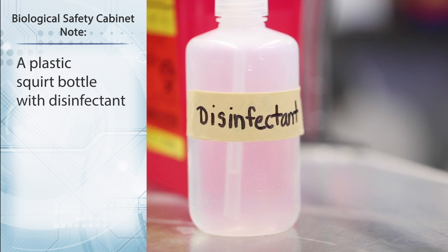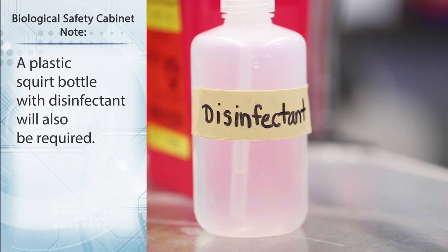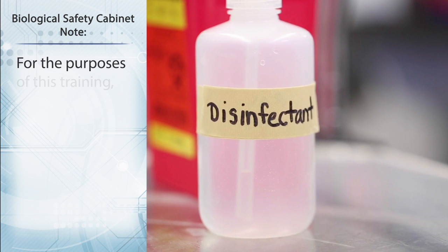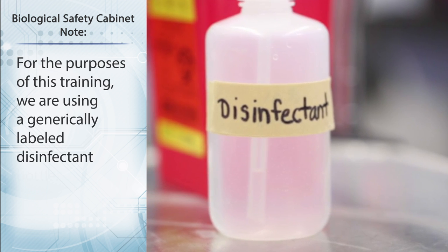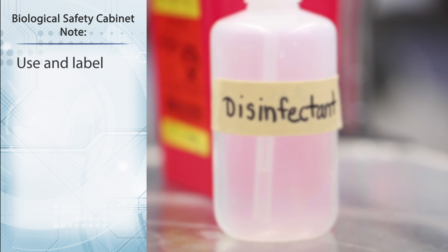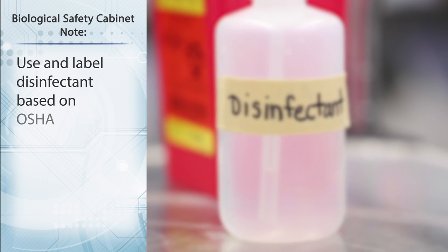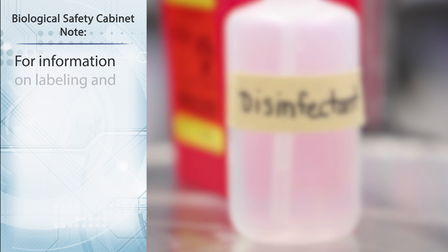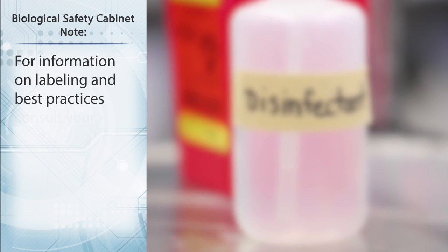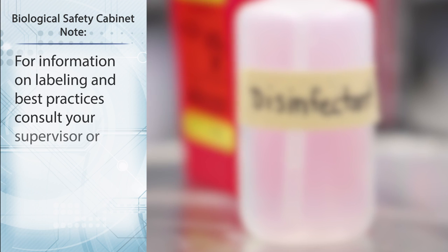A plastic squirt bottle with disinfectant will also be required. For the purposes of this training, we are using a generically labeled disinfectant bottle. Use and label disinfectants based on OSHA requirements. For information on labeling and best practices, consult your supervisor or safety office.